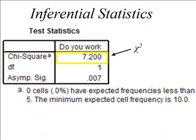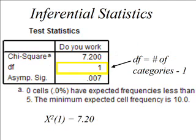Looking at the bottom table more closely, there are three rows: the chi-square row, which is the value of the chi-square analysis; DF for degrees of freedom; and asymptotic significance, which is our p-value. The chi-square value is 7.2 — the larger that value, the more likely we'll reject the null hypothesis. Degrees of freedom equals 1, calculated as the number of categories minus 1. We had two categories — yes and no — so 2 minus 1 equals 1.